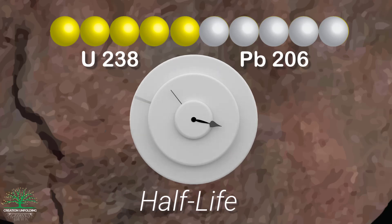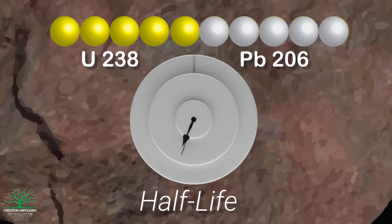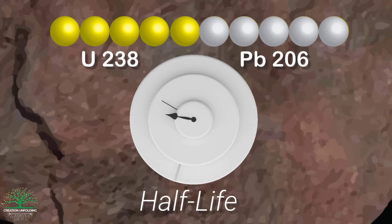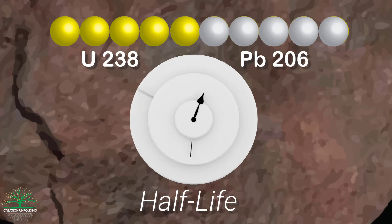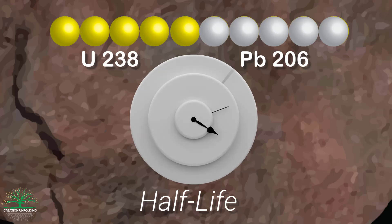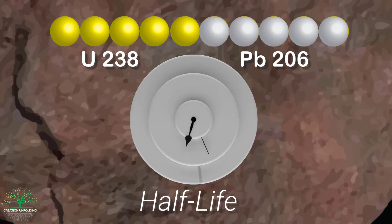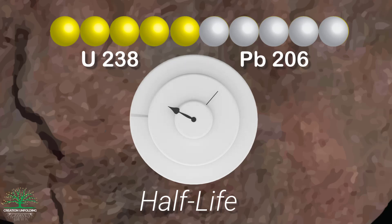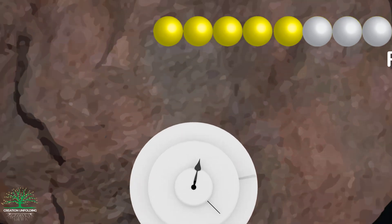The half-life simply means the time it takes for half of the original atoms to decay and turn into lead atoms. This would be true whether we had 10 atoms, 100 atoms, or 10 million atoms. According to uranium-238's half-life, it will always take 4.5 billion years for half of the atoms, no matter how many there are, to turn into lead-206.